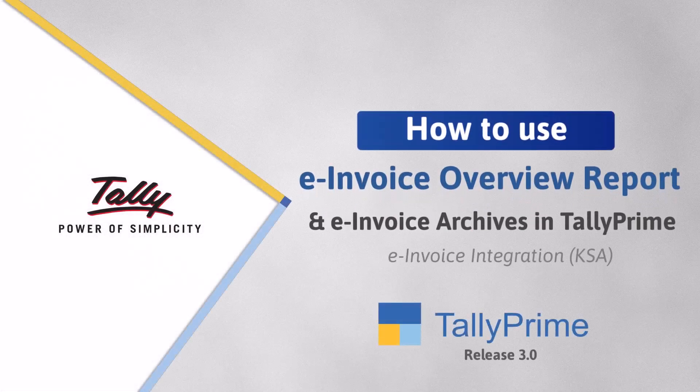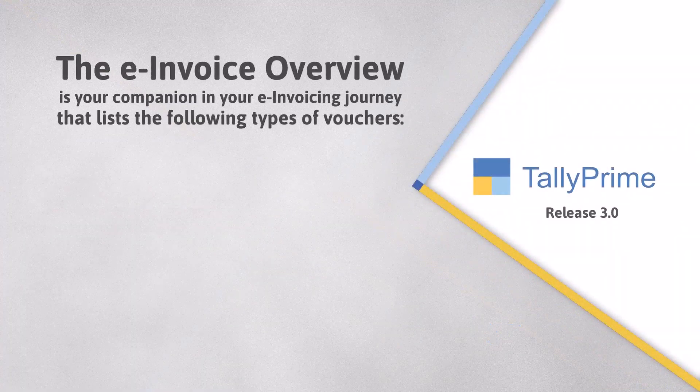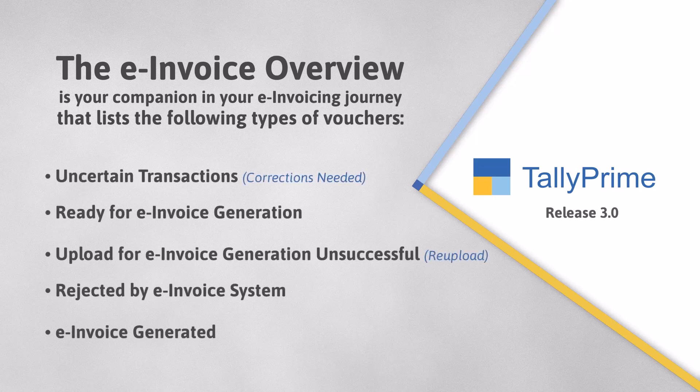Welcome to Tally help videos. In this video you will understand the process of using the e-invoice overview report and e-invoice archives in Tally Prime. The e-invoice overview report provides you with the e-invoicing status of vouchers. The report lists vouchers that are ready for e-invoice generation and those for which e-invoices are already generated. You also get to know the uncertain transactions you need to work on, those rejected by the e-invoice system, and vouchers whose e-invoice status is yet to be updated. E-invoice overview becomes a companion in your e-invoice cycle where you can track the status and take actions as needed.